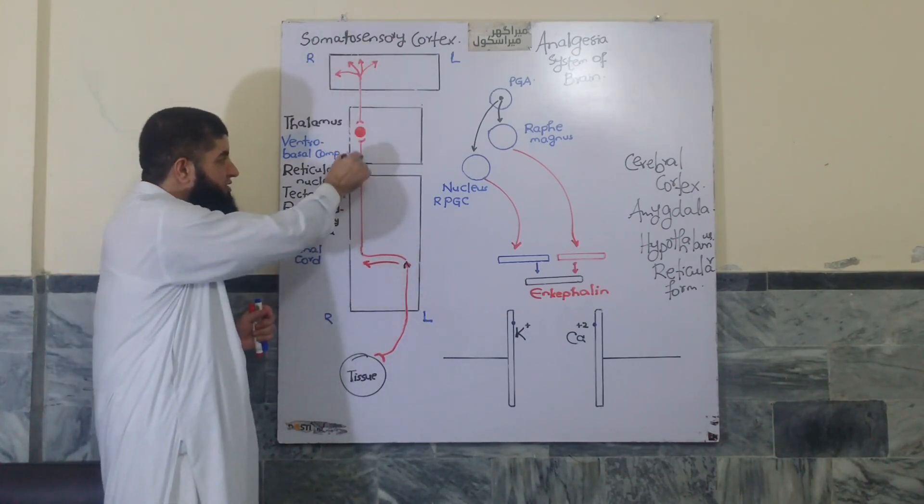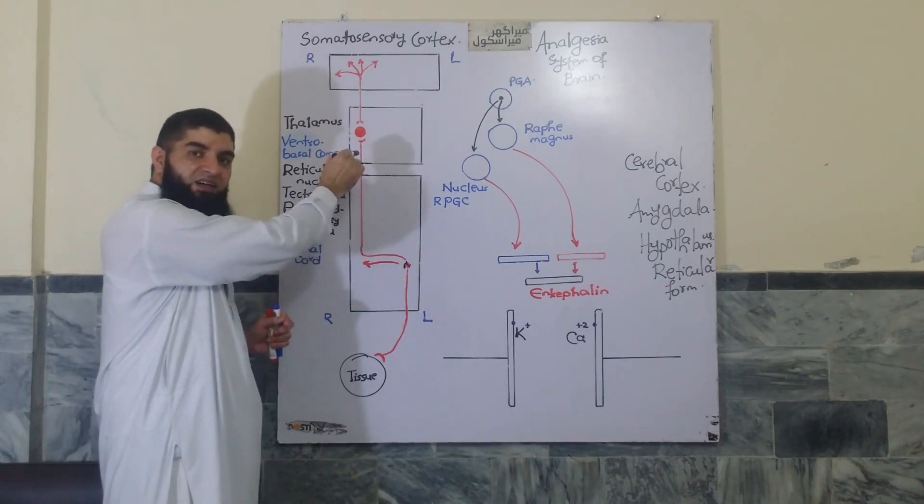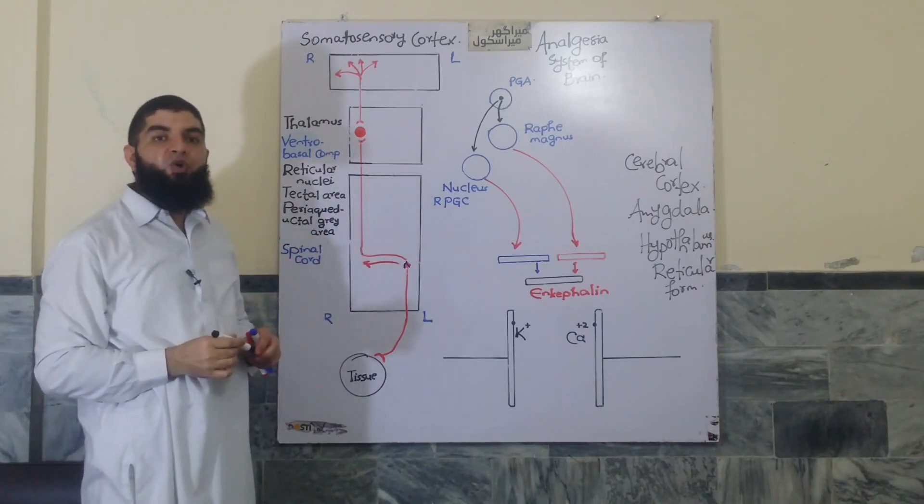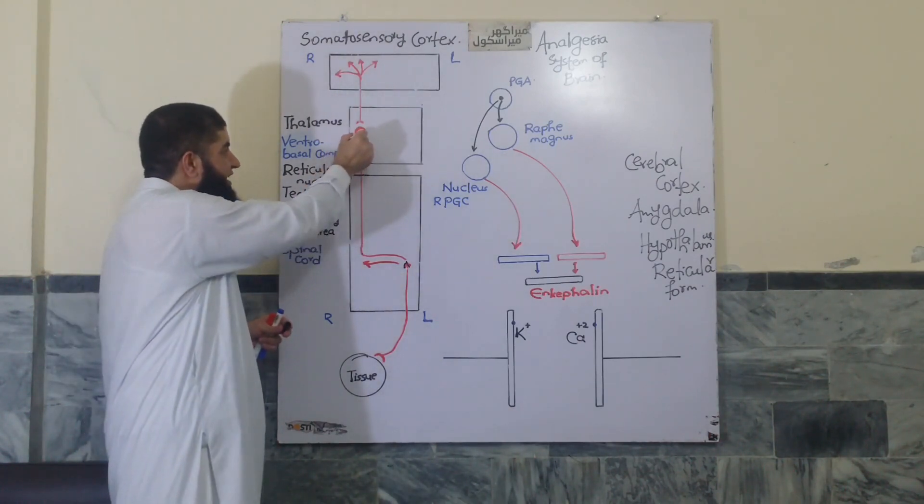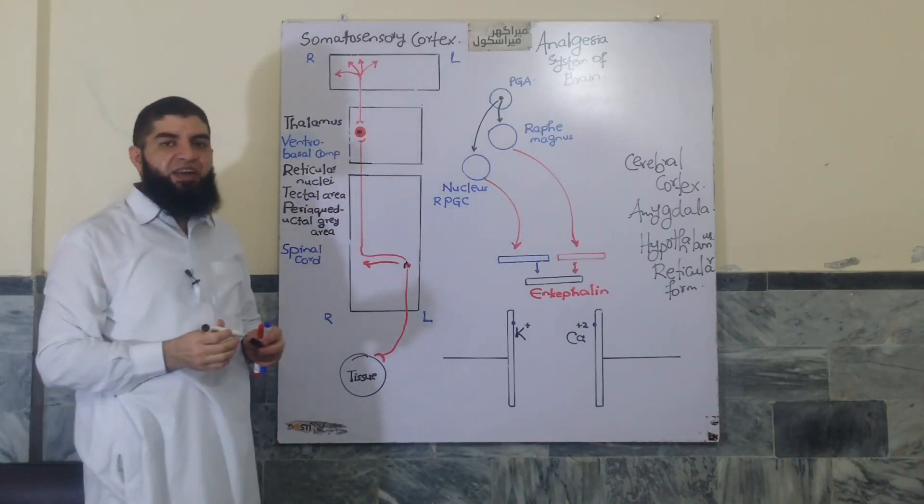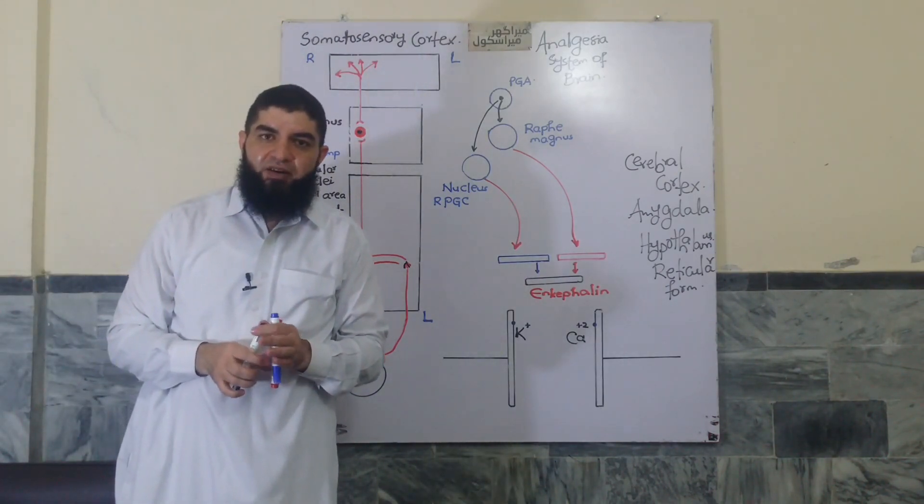Only the second order neurons like the fast pain fibers ascend on the opposite side, on the contralateral side, but only 10 to 25% of the fibers terminate here in the thalamus while the remaining fibers project to alternative destinations in the brain.